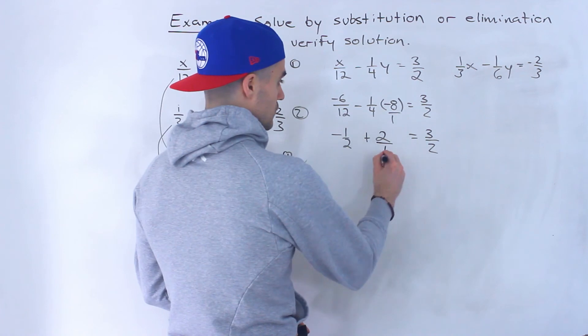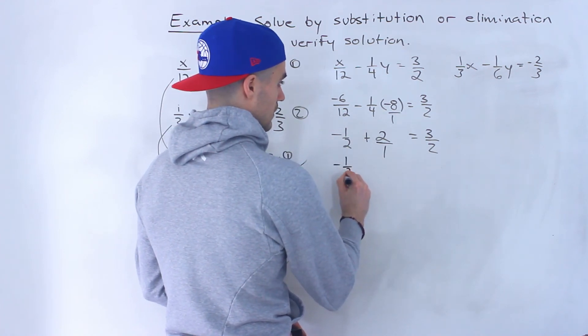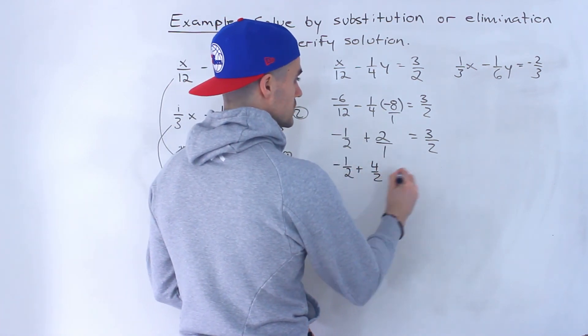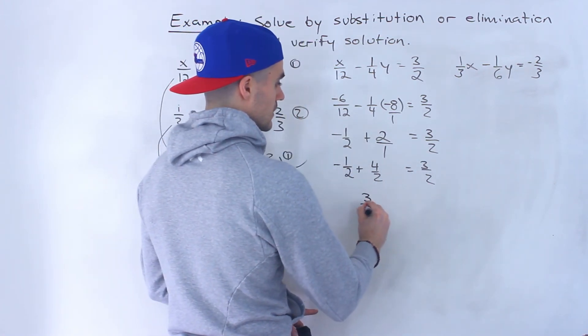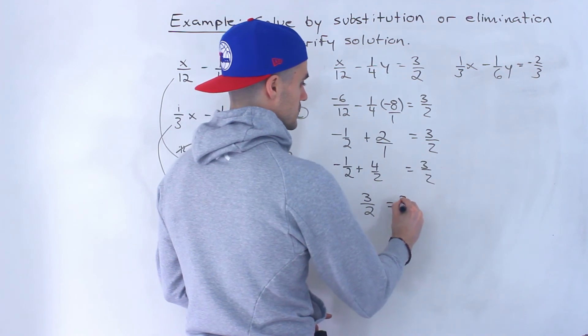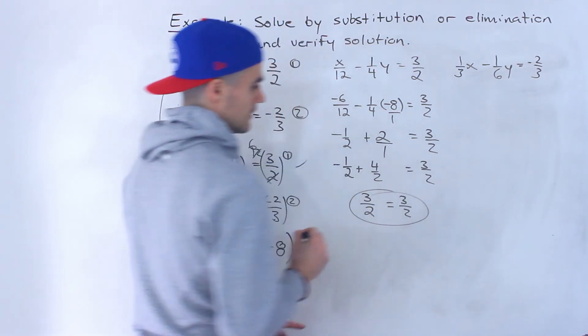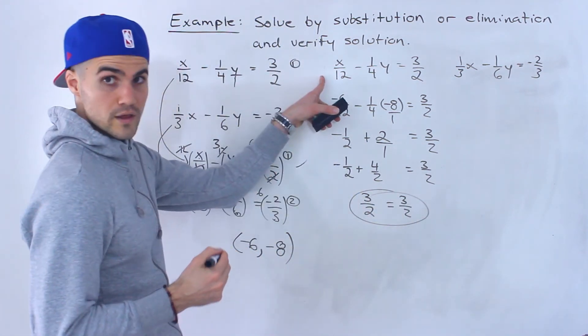And then notice here this 2 is over 1. So we could change that to 4 over 2. Common denominator. Then negative 1 plus 4 gives us 3. So 3 over 2 equals 3 over 2. So the check verifies with the first line.